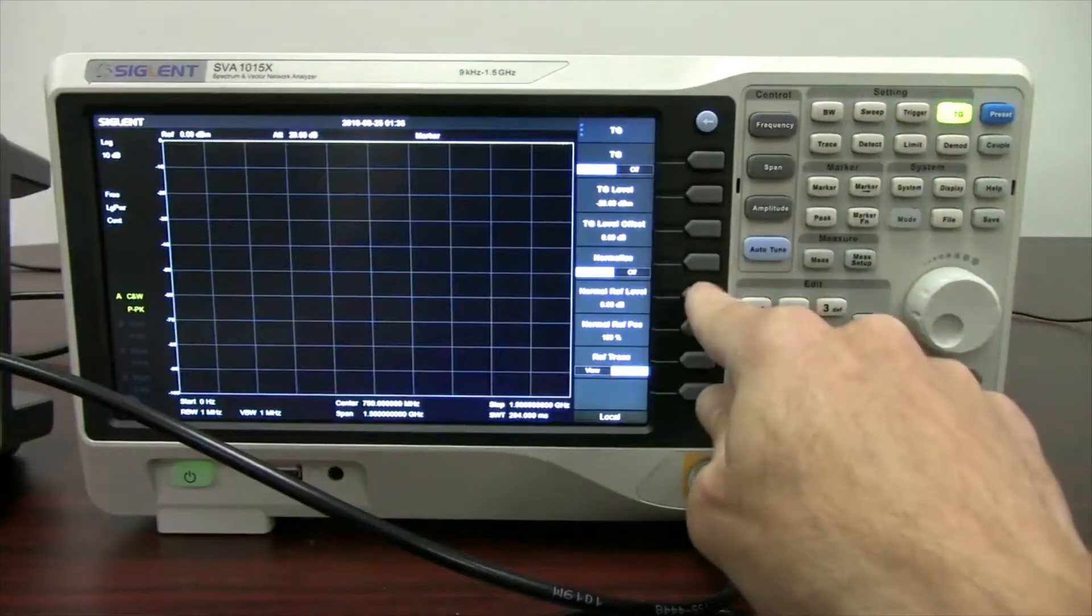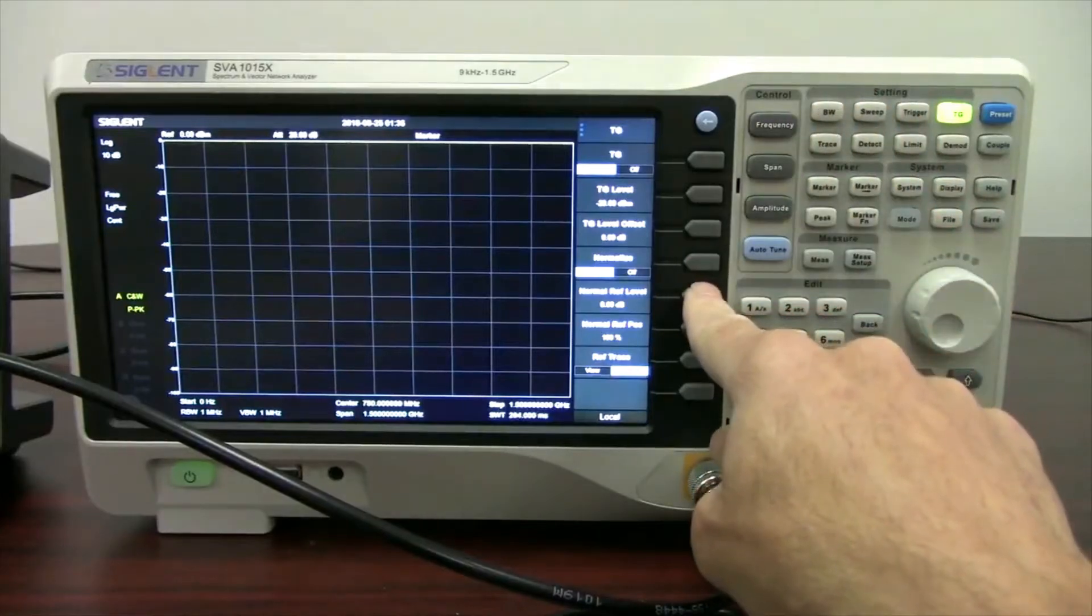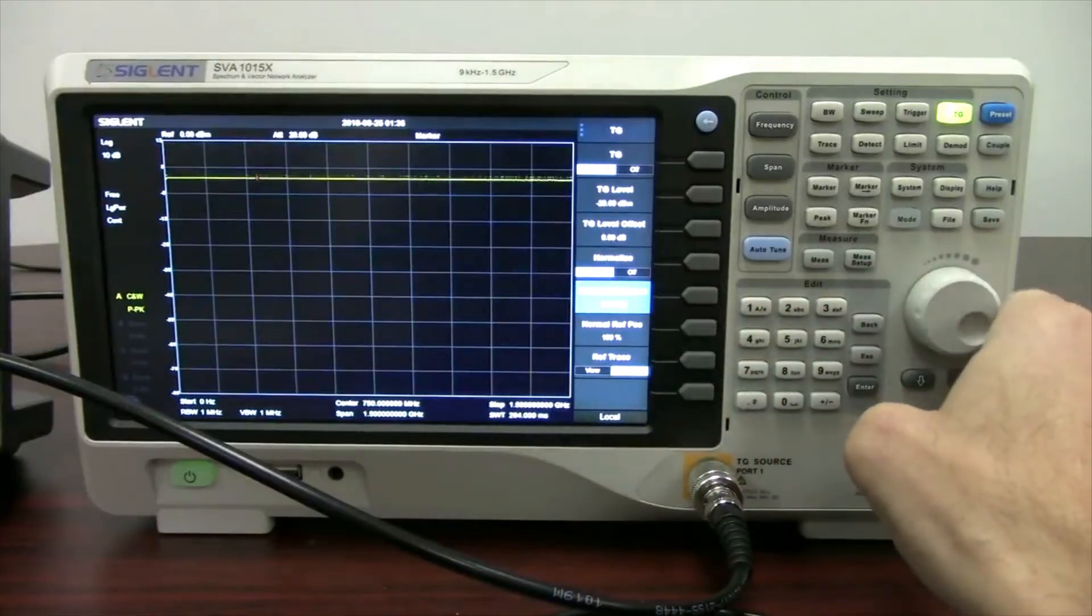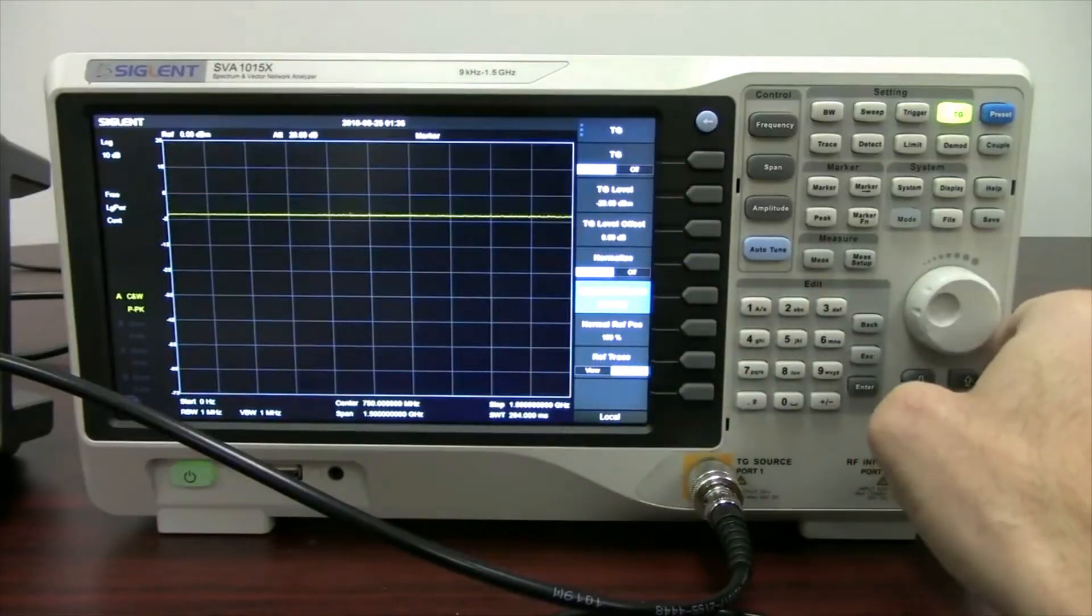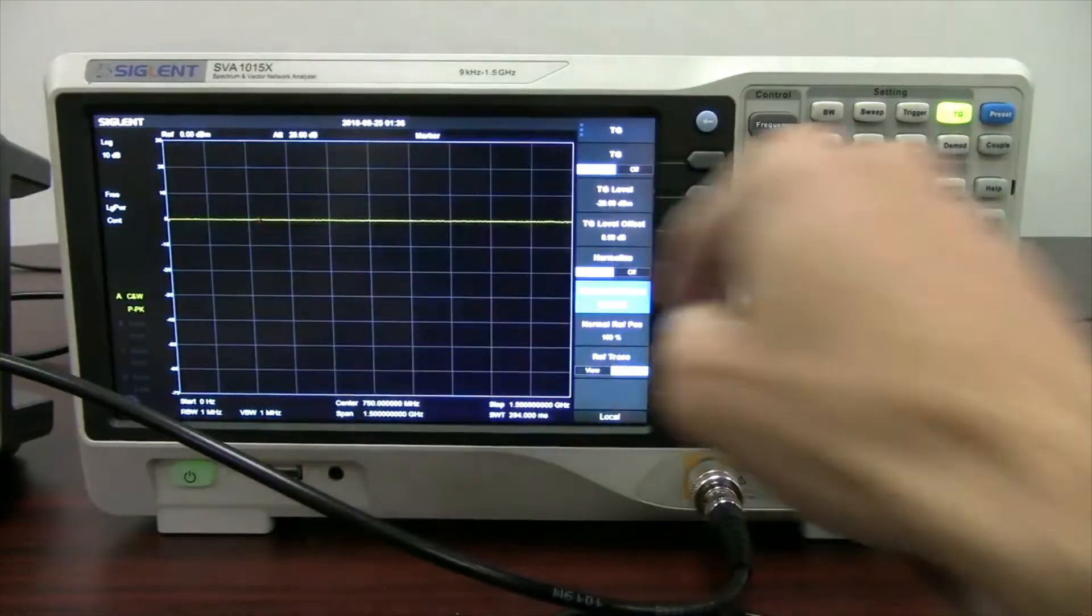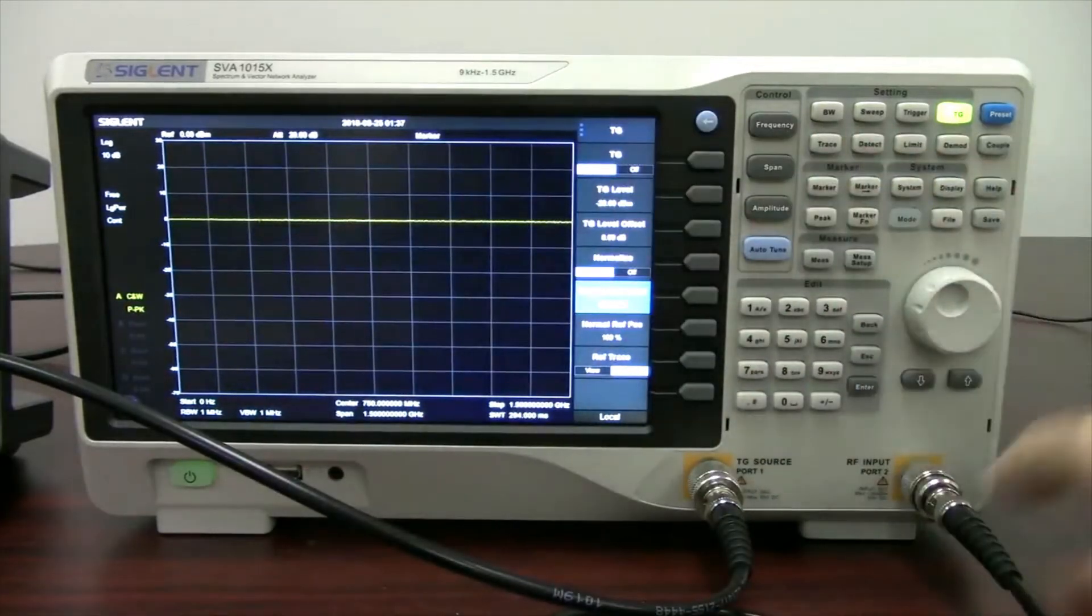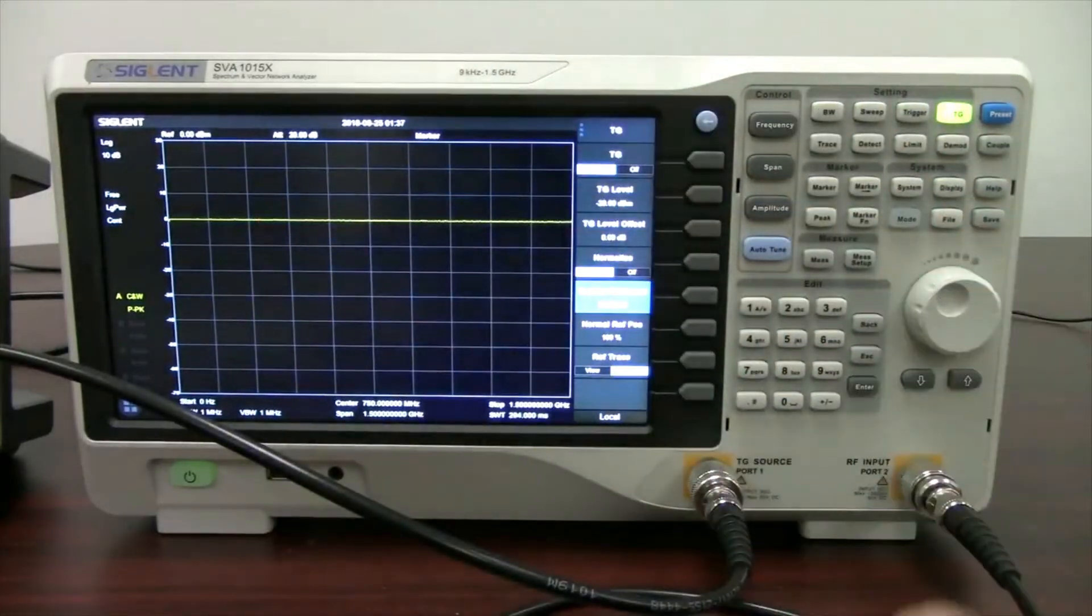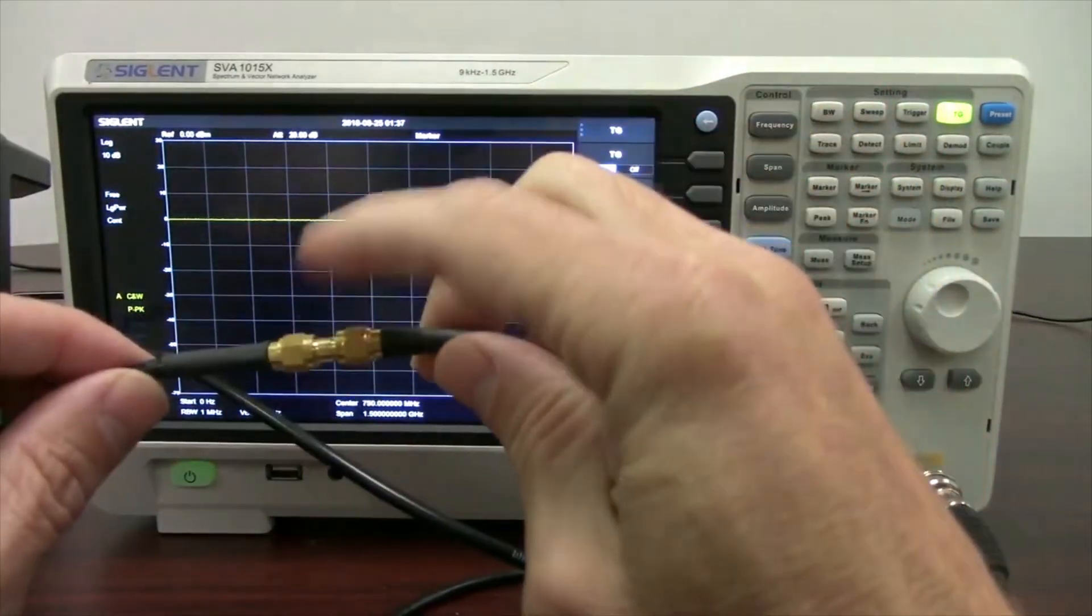Now what we can do is normalize, we can move the normalization reference level. So we're just going to go here and drop it down, and now you'll see that it's a nice flat line. Again, it's at zero dBm, which makes sense because we've normalized all of the losses of the cabling, so we effectively have a relative zero measurement. Now that is with this adapter in place.